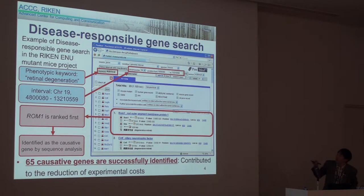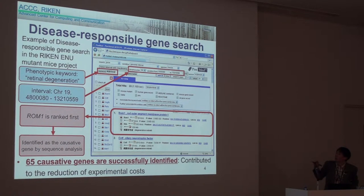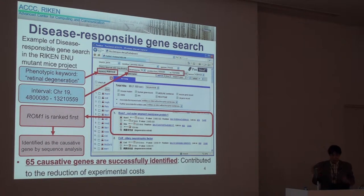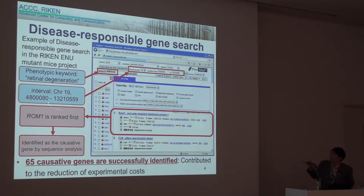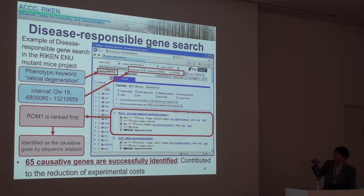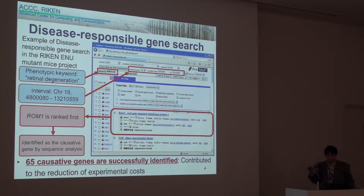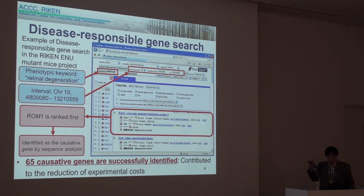I use a specified phenotypic keyword — in this case, retinal degeneration — and also the genomic interval obtained by conventional genetic mapping, in this case chromosome 19. Then the system generates a ranking list of mouse genes statistically associated with the keyword. This is one of the successful cases where the gene ranked first, ROM1, was identified as the causable gene by wet experiment.